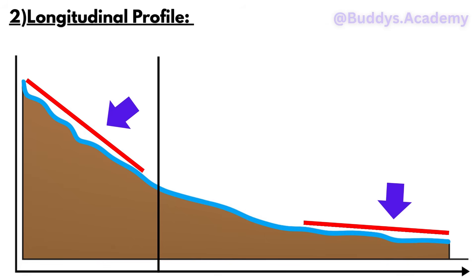Now in this view, we're also going to be able to see the river's energy. If you take a look at the upper course, because the slope is going to be so steep, the river is going to have a high energy. And if your river is going to have high energy, that means that erosion is also going to take place. So in the upper course, we're going to have a steep gradient, meaning vertical erosion is going to take place, and we're also going to find features like your waterfalls and your rapids.